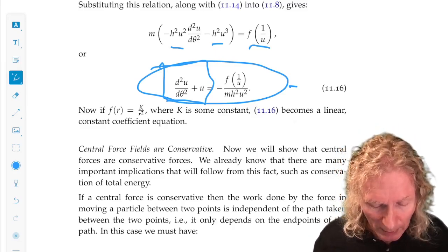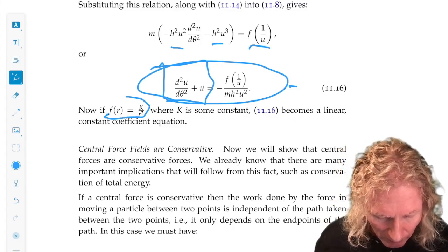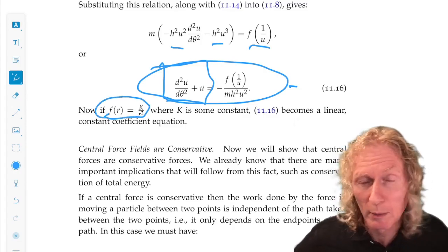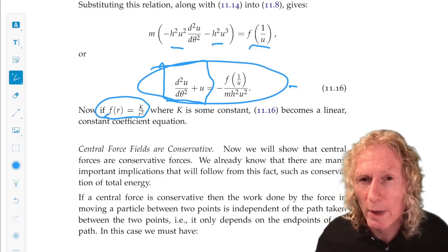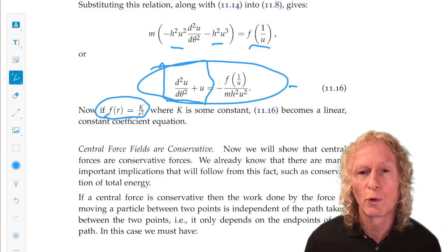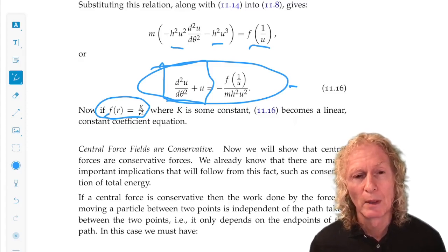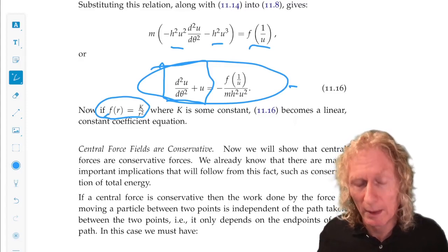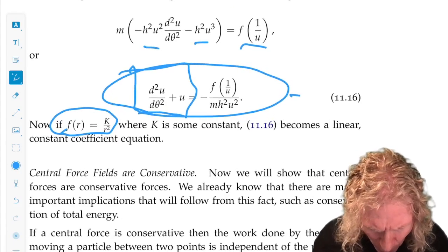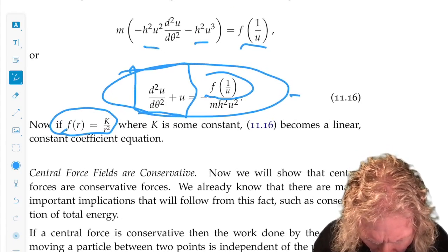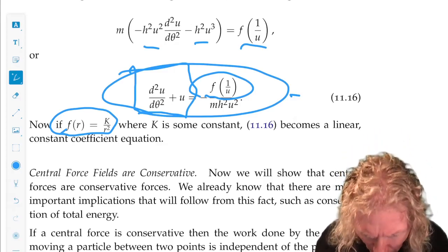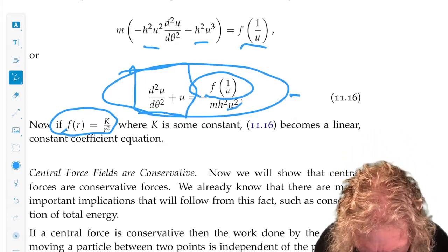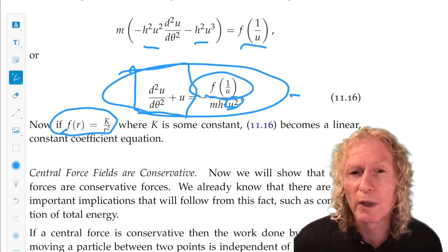If f of r is the form of some constant k, it could be positive, negative, whatever, k over r squared, and this is the form that the gravitational law of attraction between two masses is. If you plug that in here, f of 1 over u is ku squared, but on the bottom we have a u squared, so the u squared's canceled.